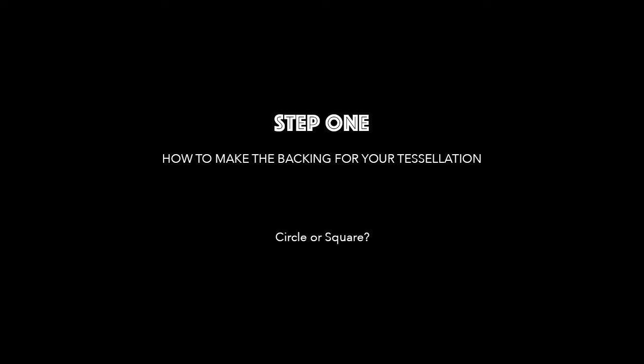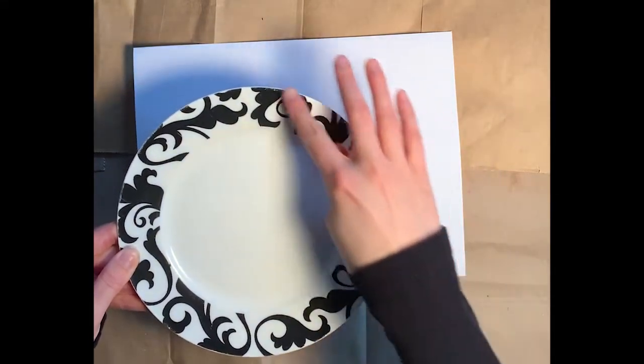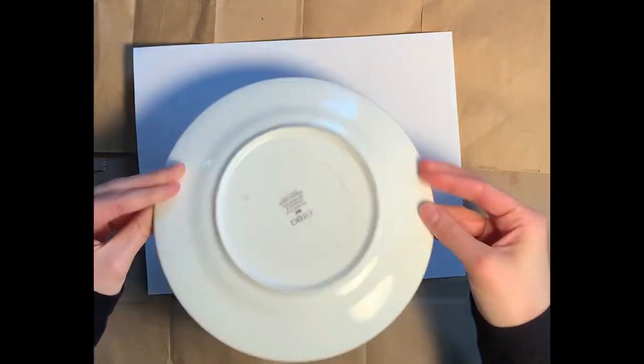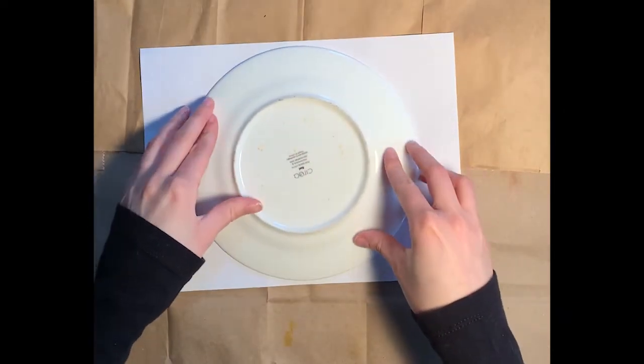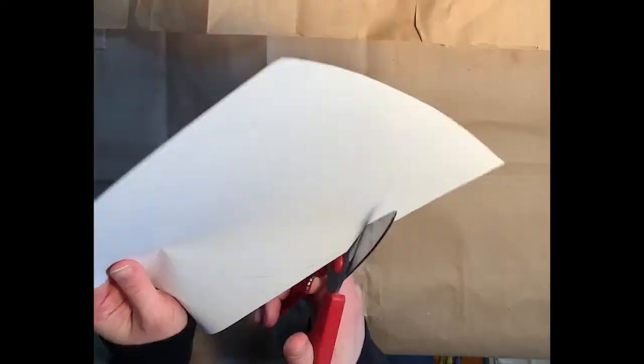Step one, how to make the backing for your tessellation. Do you want a circle or a square? If you want a circle, you're going to need something round, like a plate or a bowl that's about the same size as your paper. Flip it over, trace it, and cut it out.